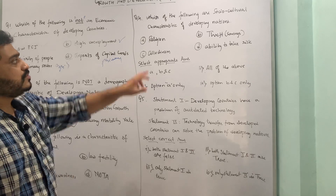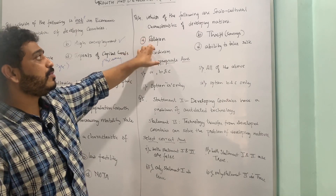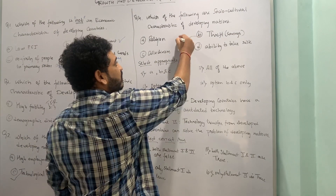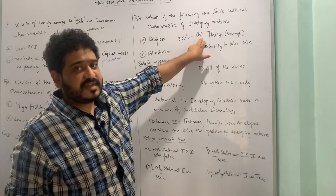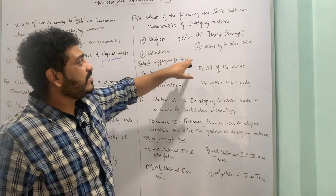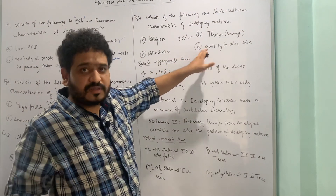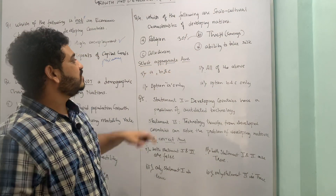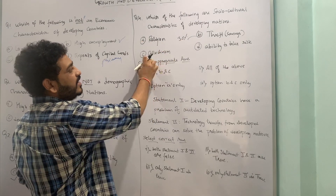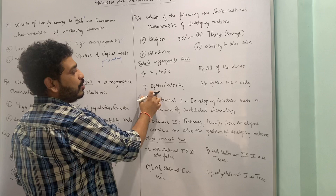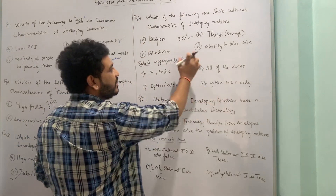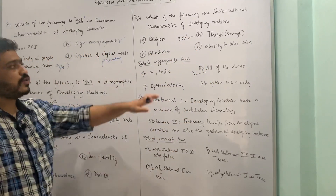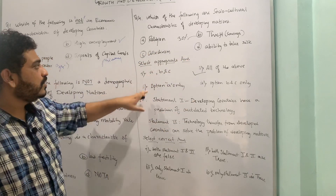The fourth MCQ asks which of the following are socio-cultural characteristics of developing nations. The options are: religion — yes, a big factor; thrift, the habit of saving — India has a saving rate of around 30%; collectivism; and ability to take risk. The answer options include all of the above. The correct answer is all of the above — religion, thrift, and collectivism are all socio-cultural characteristics.